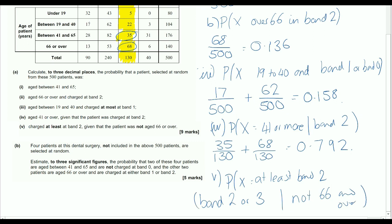So our denominator is going to be all of the people not over the age of 66. So that is the under 19s, the people who are 19 to 40, and the 41 to 65s. And then what we're saying is they're either the people in those three categories that are in band 2, or the people in those three categories that are in band 3.